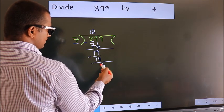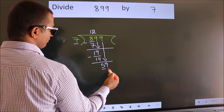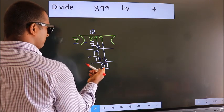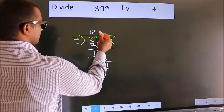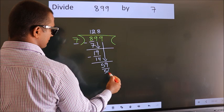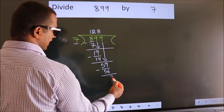After this, bring down the next number. So 9 down. So 59. A number close to 59 in the 7 table is 7×8=56. Now we subtract. We get 3.